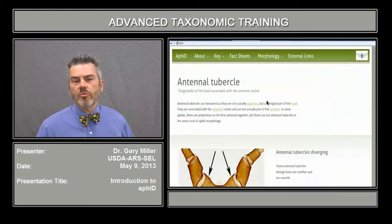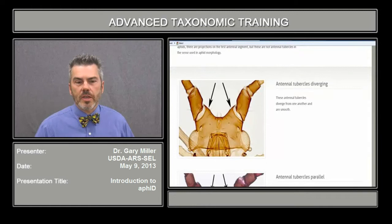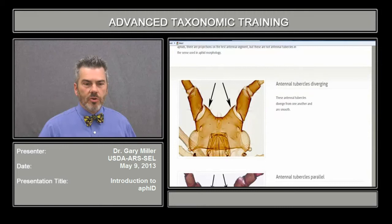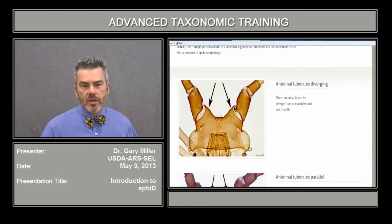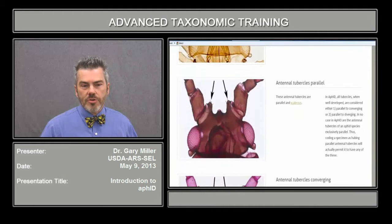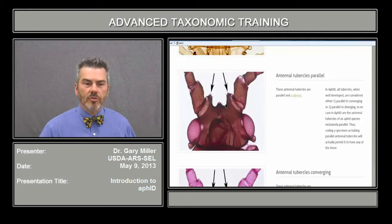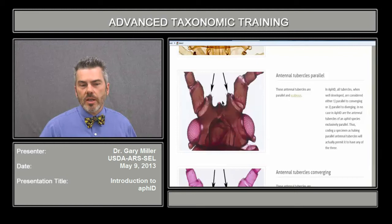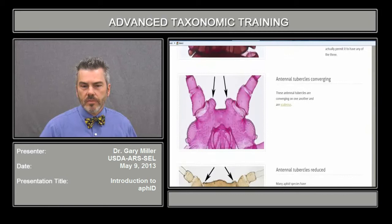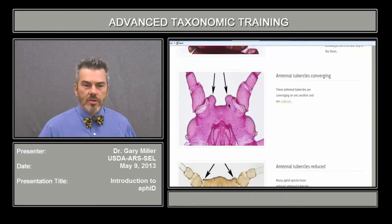Let's take a look at the antennal tubercle, another structure that often comes up in the key. The antennal tubercles are actually part of the head region, not the antennae. There are usually four different kinds of tubercles. This specimen exhibits a divergent antennal tubercle. Here is a parallel tubercle, where the inner surfaces are nearly parallel. Antennal tubercles are differentiated in relation to the frons. This specimen exhibits converging antennal tubercles, leaning towards each other.